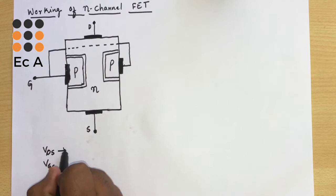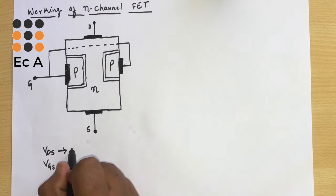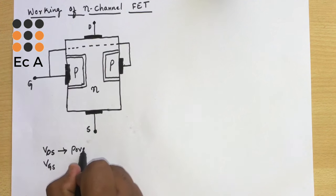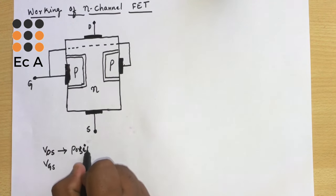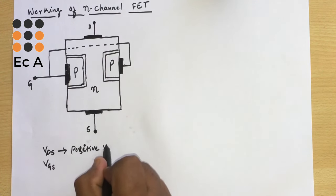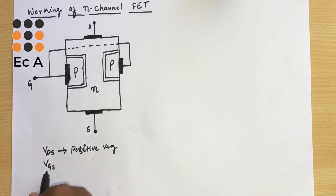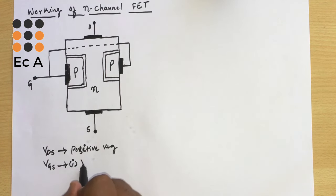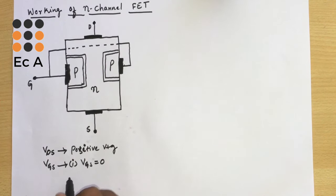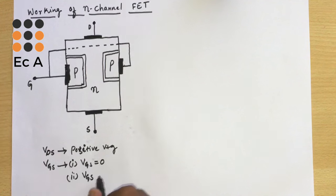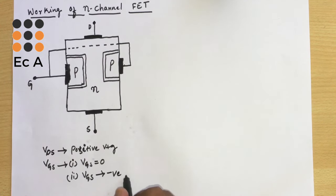For an N-channel FET, VDS should always be a positive voltage. VGS is considered in two cases: in the first case VGS will be made zero, and in the second case VGS is taken as a negative voltage.